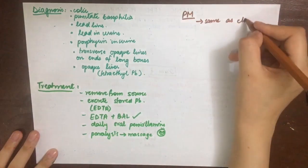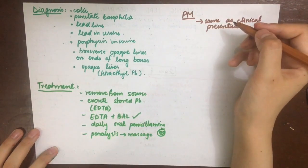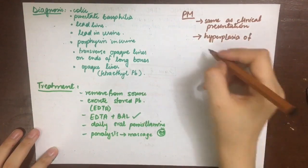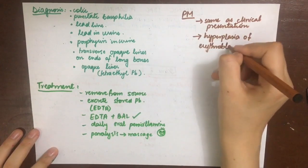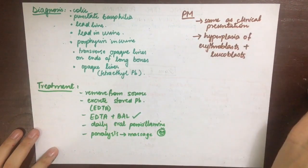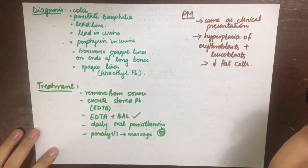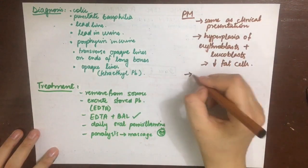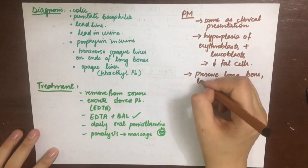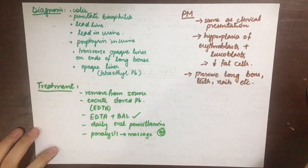In cases of death due to lead poisoning, post-mortem appearances will match the clinical picture. There will be hyperplasia of erythroblasts and leukoblasts in the bone marrow due to anemia, and decreased fat cells. For analysis, long bones, teeth, nails, etc. should be preserved.